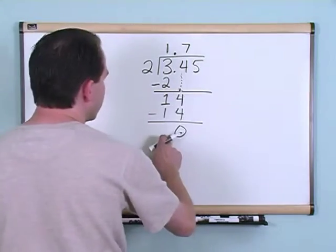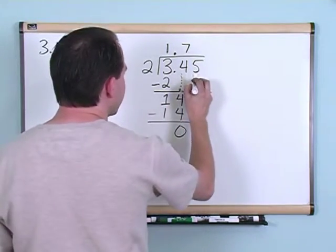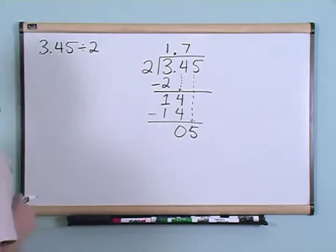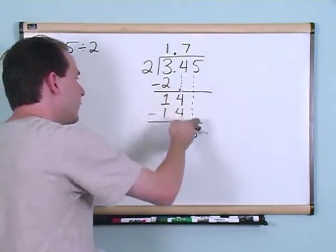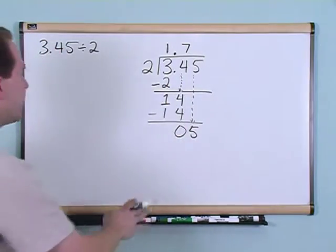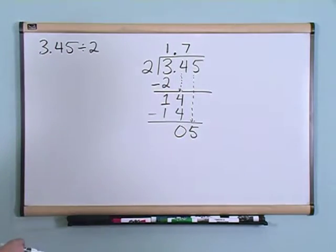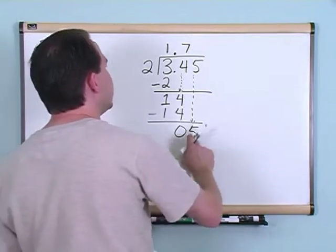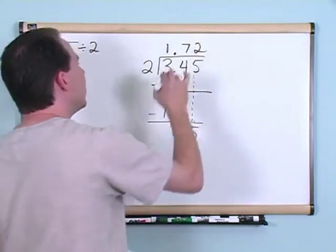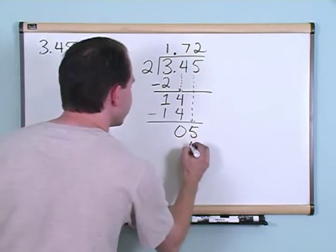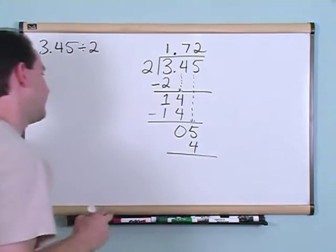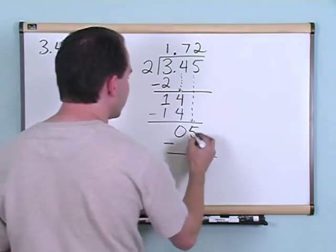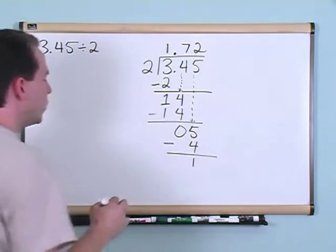Can 2 go into 0? Well, no, of course it can't. But before we give up, we're going to drop down this 5. We're allowed to drop down one number from the next column anytime you can't divide what you have here. We ask ourselves, can 2 be divided into 5? The answer is yes, it can go 2 times because 2 times 2 gives us 4. And we subtract, like always, 5 minus 4 gives you 1.